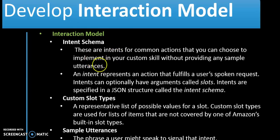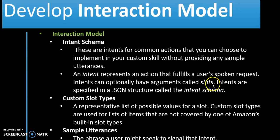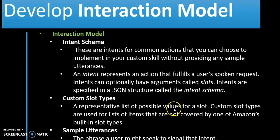Now you can understand what an intent is — these intents are the common actions that you can choose to implement your custom skill. An intent represents a spoken request; the intent can optionally have arguments called slots. Intents are specified by a JSON structure called the intent schema. What is the custom slot type? If we are going to take any custom value from the user we need to give it a custom type. If we ask 'what is Brighter API', the Brighter API is the custom value — it will not go into any global value. So we represent a list of possible values for slots. Custom slot types are used for lists of items not covered by one of the Amazon built-in slot types. The sample utterance is the phrase a user might speak to signal that intent.